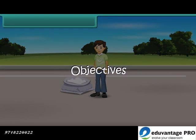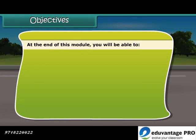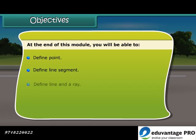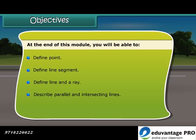At the end of this lesson, you will be able to: define a point, define a line segment, define a line and a ray, describe parallel and intersecting lines, and identify an angle.